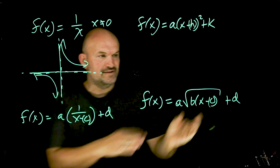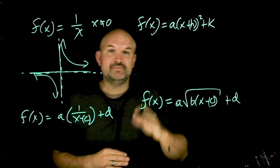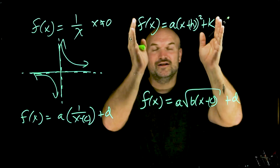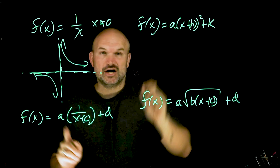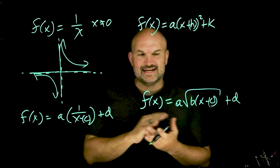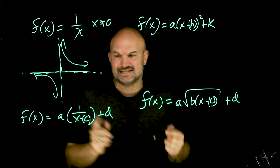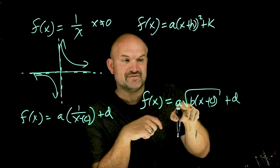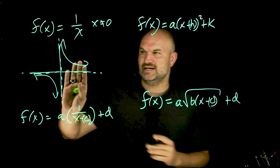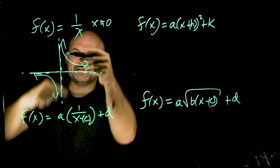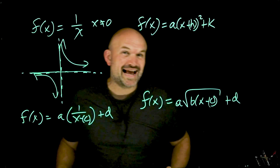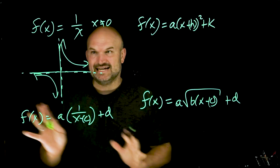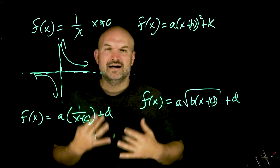The d (or k) is outside the function, so that gives a shift up or down — plus 5 shifts up five, minus 1 shifts down one. This applies to the reciprocal, square root, quadratic, or any other function. The a is also outside, so it provides a vertical stretch or compression as well as a reflection about the x-axis. We'll deal with a number in the denominator and a number in front in the examples.